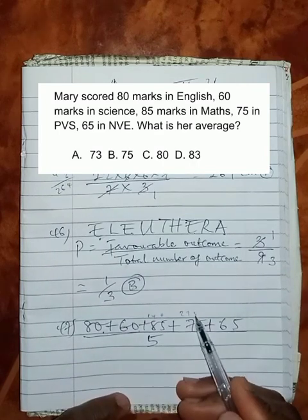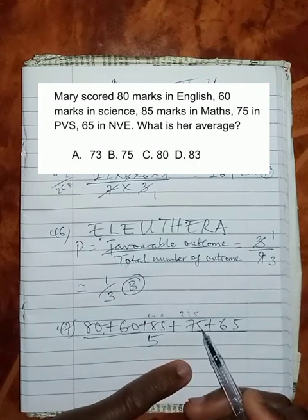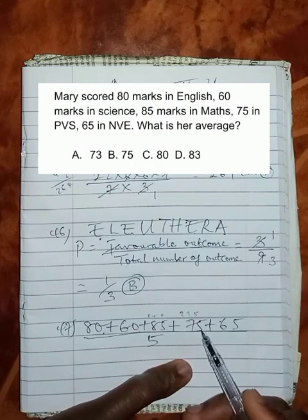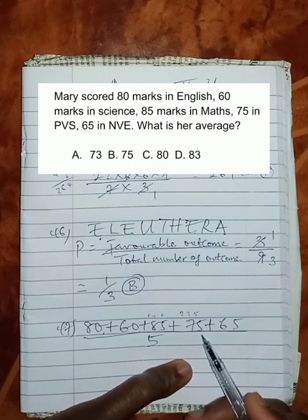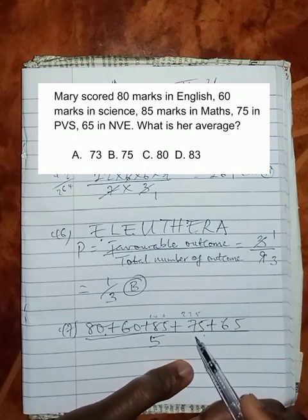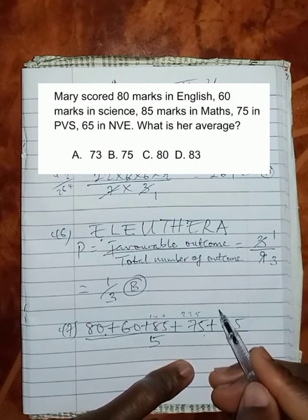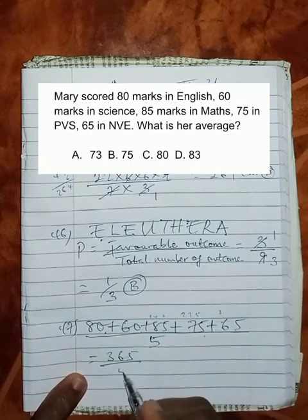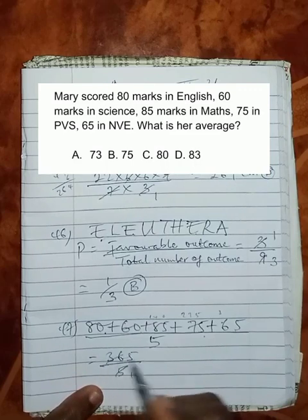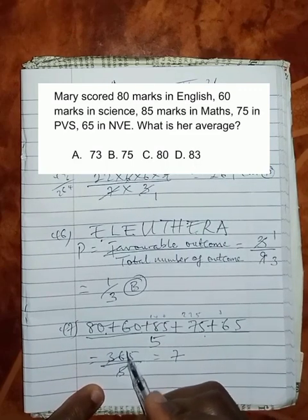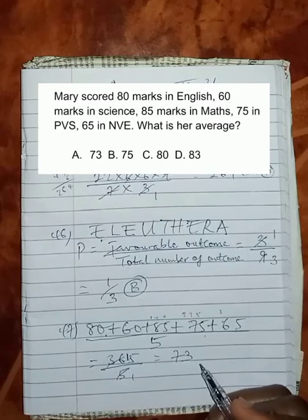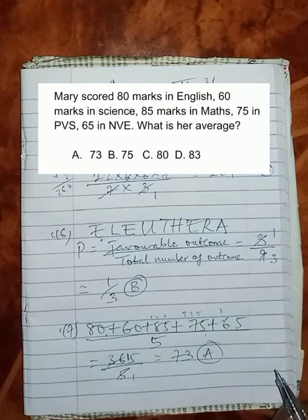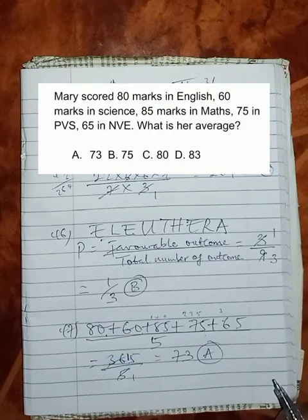225 plus 75 will give us 300. Now 300 plus 65 will give us 365 divided by 5. Let's divide this. 5 in 36 will be 7, remainder of 1, in 15 will be 3. So we can see clearly that the average of her marks is 73, which is option A.